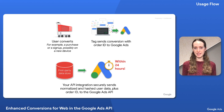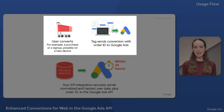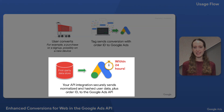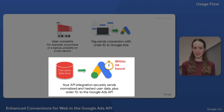With prerequisites implemented, your website captures the order ID and information your system will need to look up first-party data at the same time as the Google tag sends the conversion to Google Ads. With enhanced conversions for web, you leverage your first-party data to send additional user identifiers that can help Google match that user to Google logged-in user data and ultimately report a conversion.